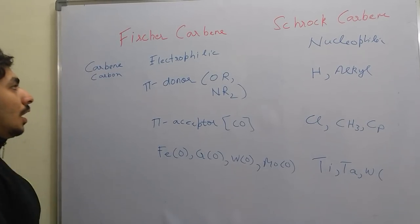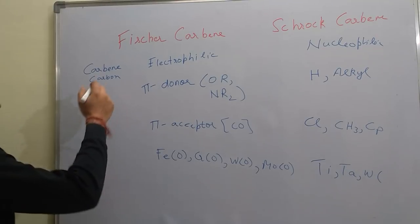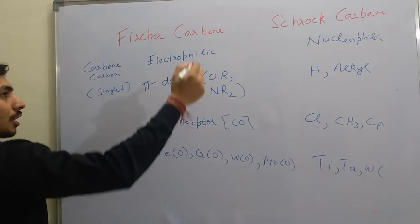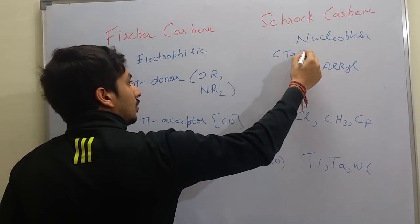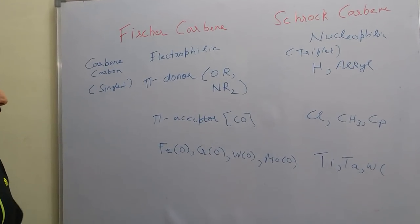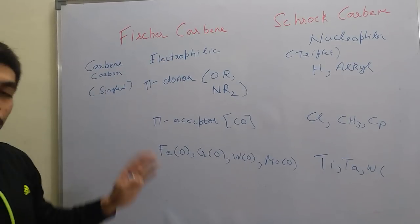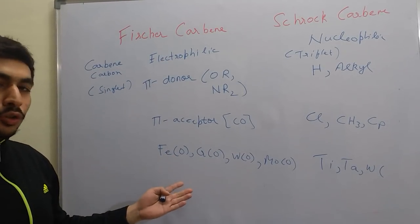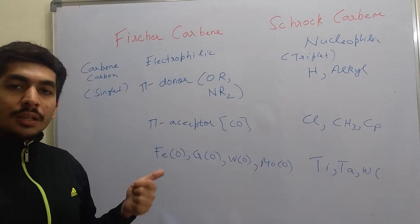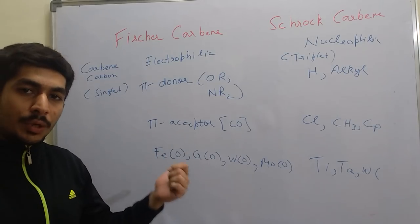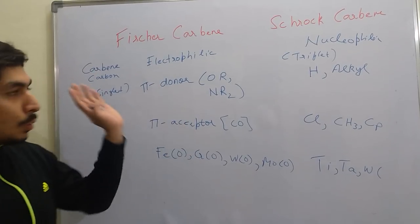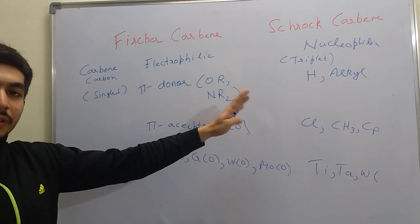In Fischer Carbenes we have a singlet carbene, and in Schrock Carbenes we have a triplet carbene. The kinds of questions asked in NET and GATE — almost five or six questions — can typically be solved with the help of this table alone. You can also find this table in Crabtree, which is a really good book that clearly explains the differences between Fischer and Schrock Carbenes.